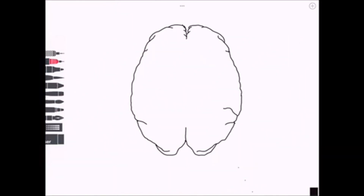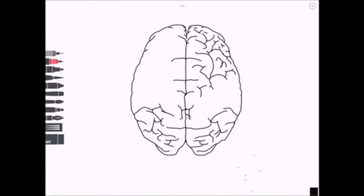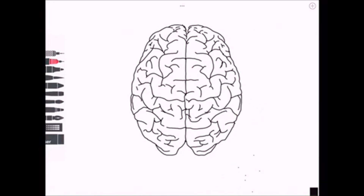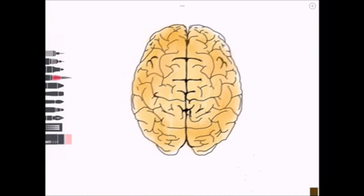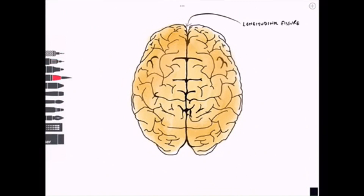We can move on now to look at a superior view where we can see both hemispheres, with the separation between the two hemispheres running down the middle. This is known as the longitudinal fissure. If we were able to prise the hemispheres apart we'd see the corpus callosum.